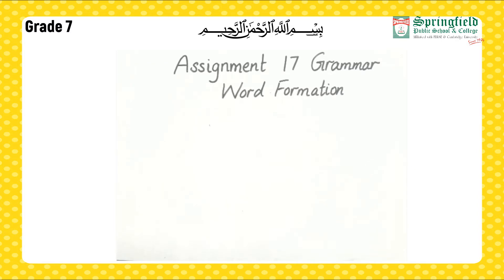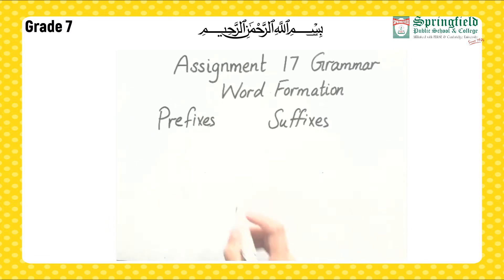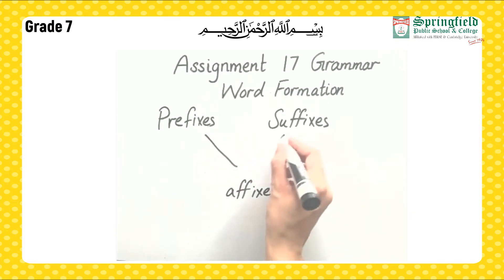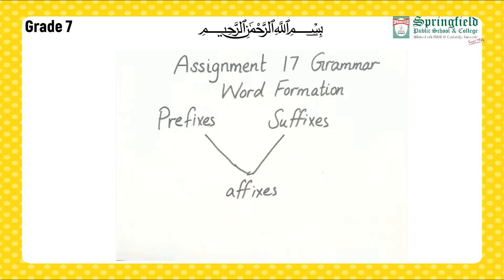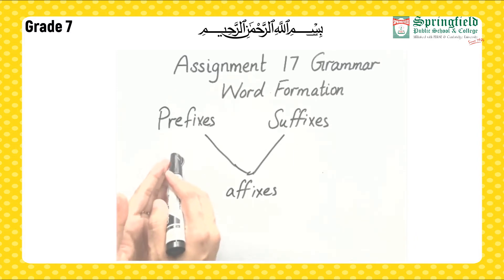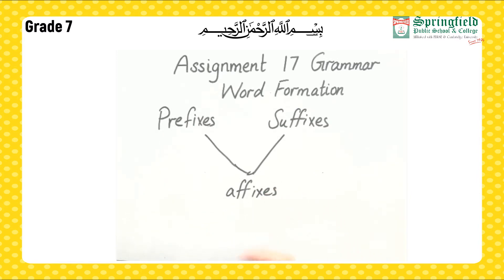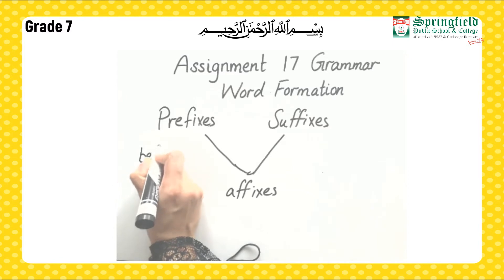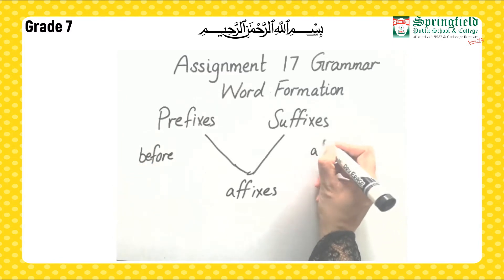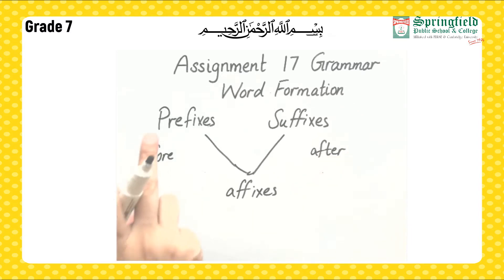Do you know that we can form new words by adding affixes? Do you know what affixes are? Do you have any idea about prefixes or suffixes? What kinds of words can be formed by adding affixes to the root words? New words can easily be formed by using prefixes and suffixes added to the root word. Prefixes and suffixes are together called affixes. We will first discuss prefixes and then suffixes.